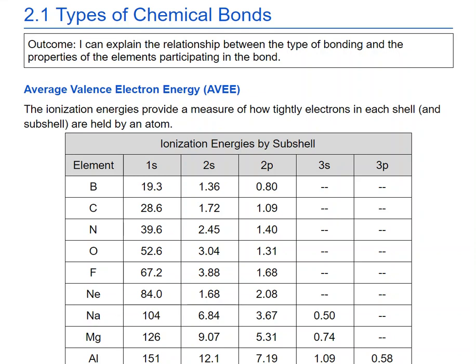This is 2.1 Types of Chemical Bonds. Our outcome is: I can explain the relationship between the type of bonding and the properties of the elements participating in the bond.